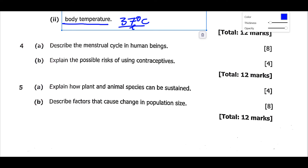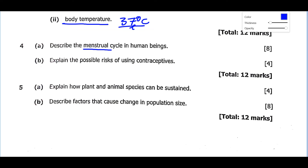Question 4A asks you to describe the menstrual cycle in human beings. You should look at three phases: the follicular phase, the ovulatory phase, and the luteal phase. Include a calendar if possible, and describe the hormones involved and the importance of the menstrual cycle. Then explain the possible risks of using contraceptives. Contraception is the process of preventing pregnancy, and contraceptives are pills, medications, or methods that help one avoid getting pregnant.